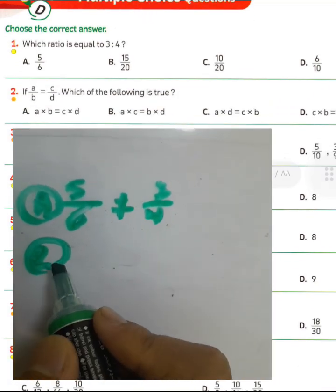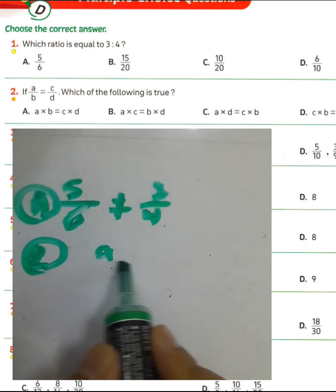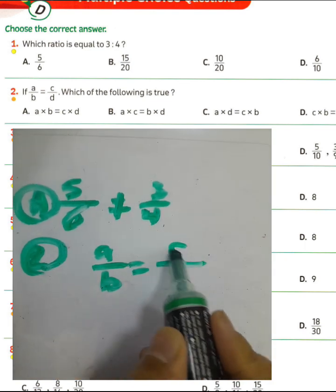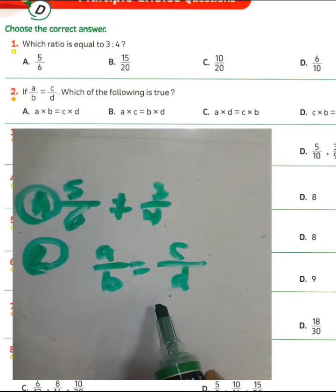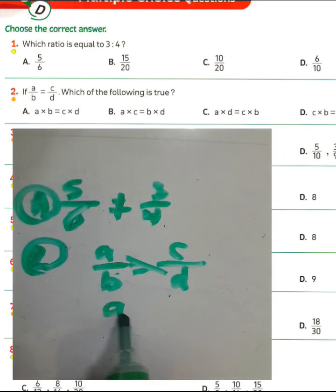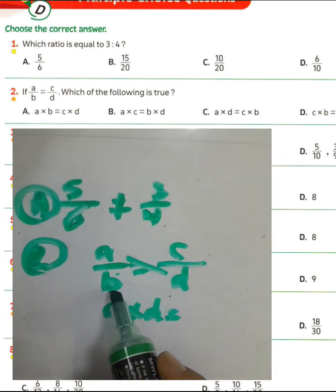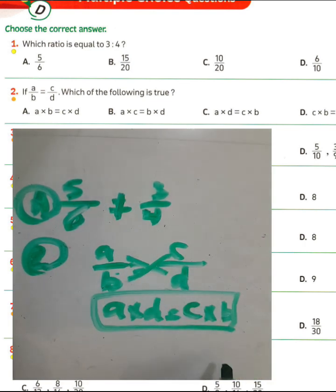Question number two: if A over B equals C over D, we can use the rule here — the product of extremes equals the product of means. A times D equals B times C. Choose letter C for question number two.